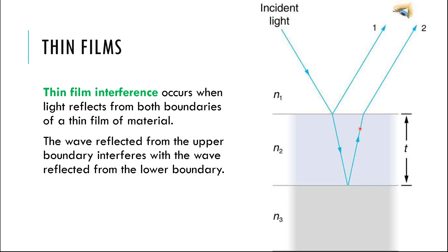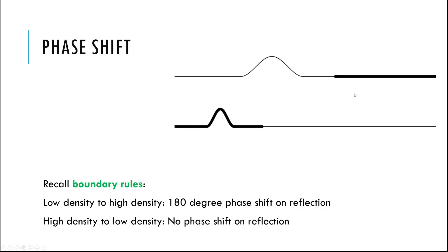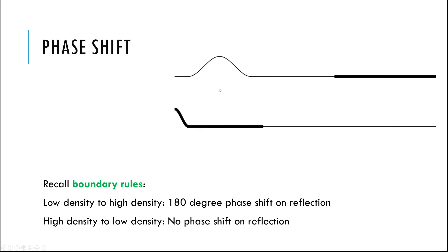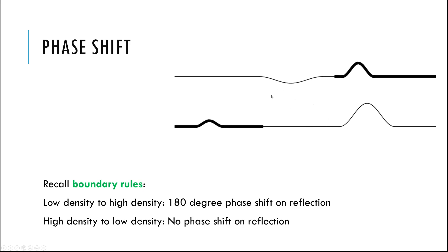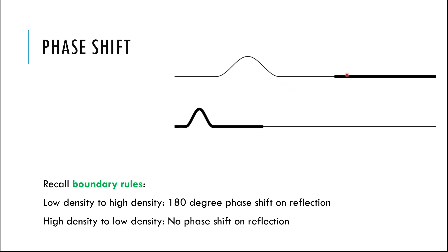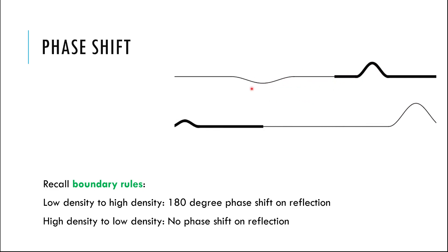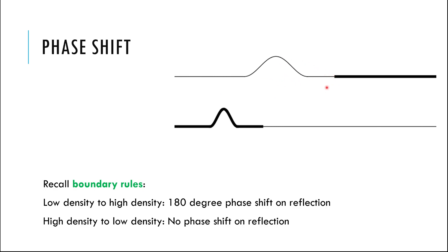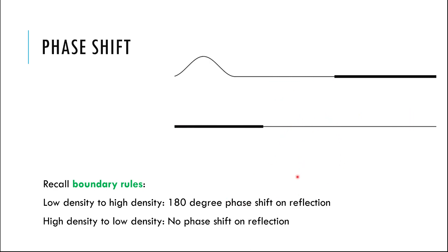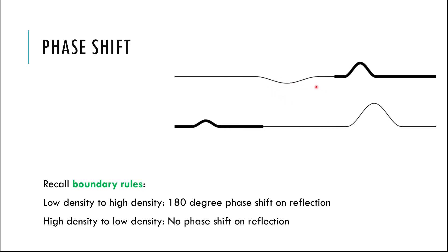There's one very important detail: what happens when a wave reflects from a boundary. Here are the boundary rules, shown with a great animation from Penn State using strings — a thin string and a thick string, then a thick string and a thin string. Part of the wave reflects and part moves into the new medium. When going into a denser medium, the reflected pulse gets flipped upside down — a 180-degree phase shift. Going from a dense medium into a less dense medium, it does not flip — no phase shift.